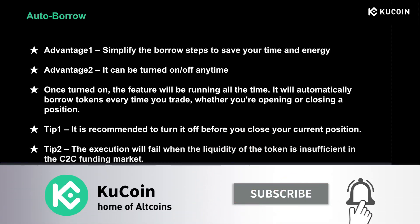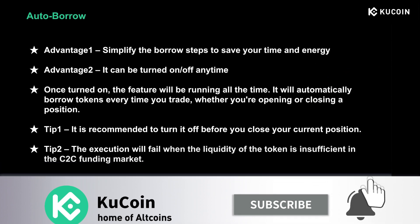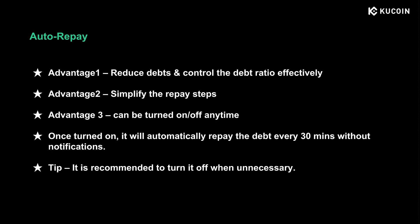Auto-repay offers three advantages. First, it helps reduce your debt and control the debt ratio effectively, so you don't have to keep an eye on your debt ratio to keep it away from 97%. Second, it simplifies your repayment steps. Third, you can turn it on and off anytime. Once turned on, auto-repay will execute debt payment every 30 minutes without notifications. Therefore, we recommend turning it off when it's not necessary.